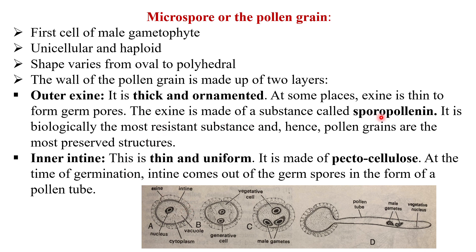The exine is made up of a substance known as sporopollenin — biologically the most resistant organic substance — and hence pollen grains are among the most well-preserved structures. The inner intine layer is thin and uniform, made up of pectocellulose. At the time of germination, the intine comes out of the germ pores in the form of a pollen tube.